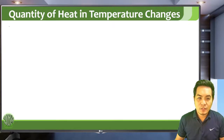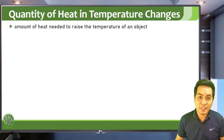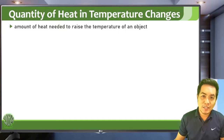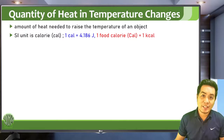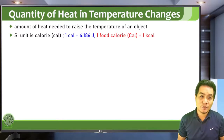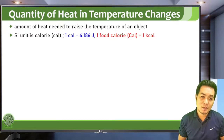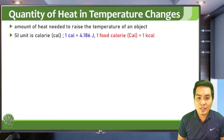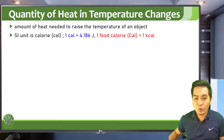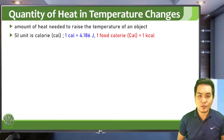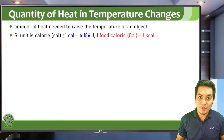The quantity of heat is the amount of heat needed to raise or change the temperature of an object. Since heat is energy, it is related to the unit of energy, which is joules. The standard unit for heat is the calorie, symbolized as cal, and one calorie is equal to 4.186 joules.